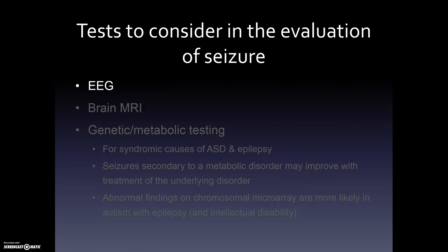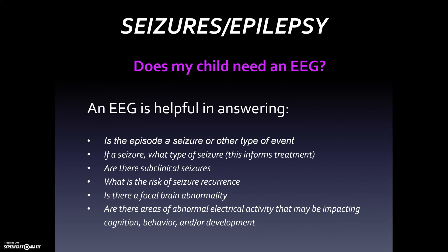There are several tests to consider in the evaluation of seizure. An EEG will be the first. It helps answer: is the episode a seizure or another type of event? If a seizure, what type? This informs treatment. Are there subclinical seizures detectable only by EEG with no outward manifestation? What is the risk of recurrence? Is there a focal brain abnormality? And are there areas of abnormal electrical activity impacting cognition, behavior, or development?